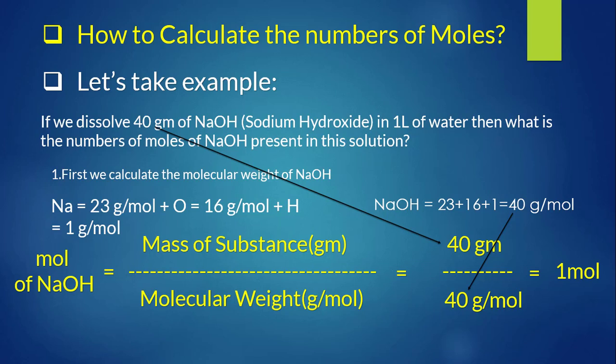Now let's calculate the number of moles with an example. If we dissolve 40 grams of NaOH (sodium hydroxide) in one liter of water, what is the number of moles of NaOH present? First we calculate the molecular weight of NaOH: sodium = 23 g/mol, oxygen = 16 g/mol, hydrogen = 1 g/mol, giving a molecular weight of 40 g/mol.